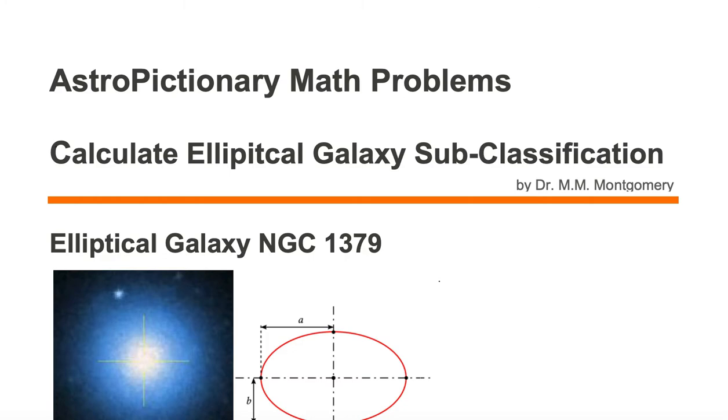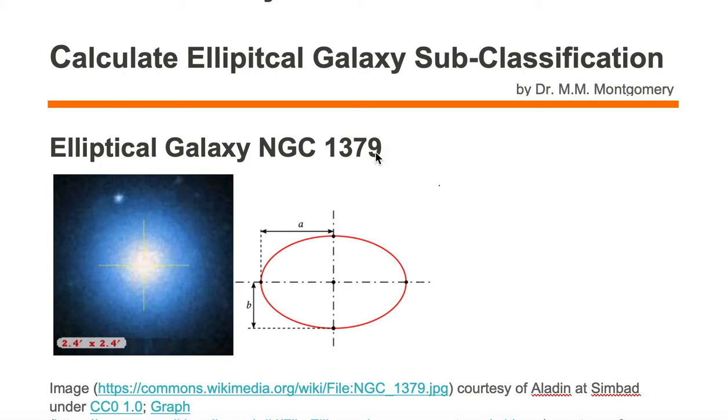We would like to calculate the elliptical galaxy subclassification for this particular elliptical galaxy, NGC 1379. We want to know its ellipticity number or its E number, its subclassification number, which is based on how elliptical the galaxy is.